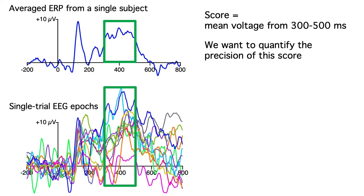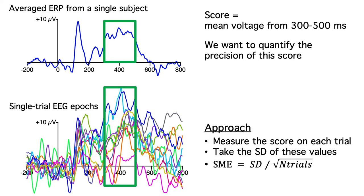We would just measure that score from each of the single trial EEG epochs for this subject. The standardized measurement error in this case is the same as the standard error of the mean. The standard deviation of the single trial score is divided by the square root of the number of trials. Simple, eh?